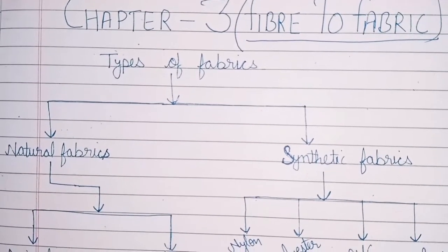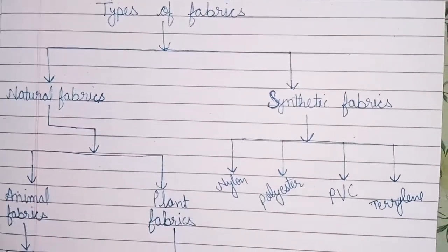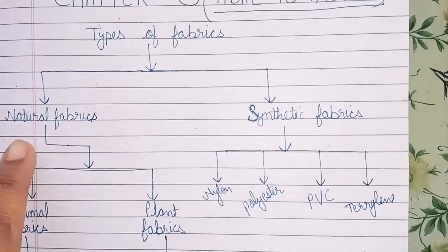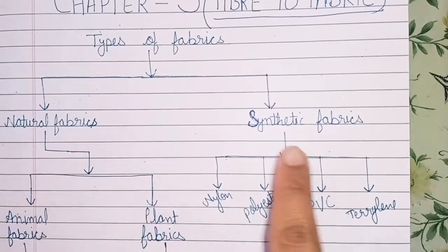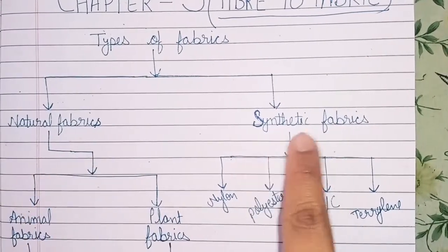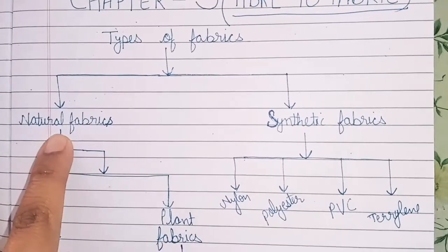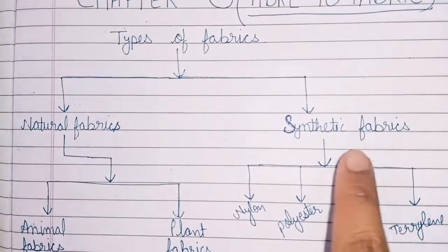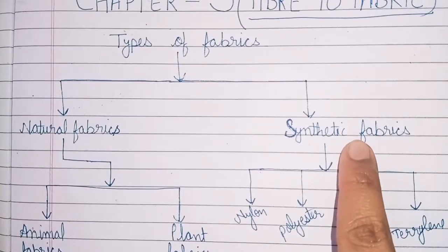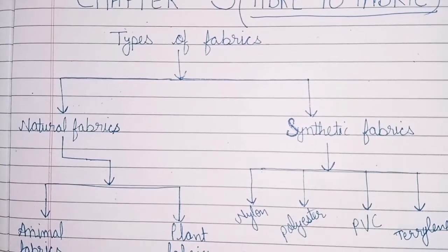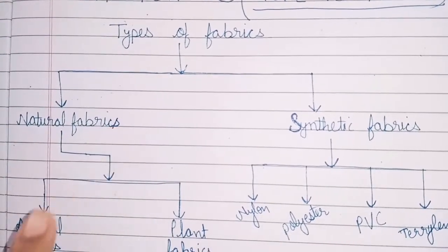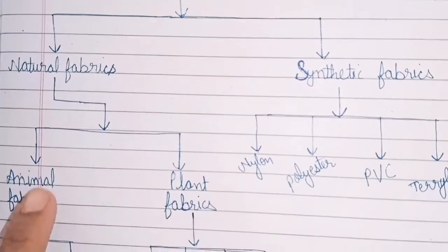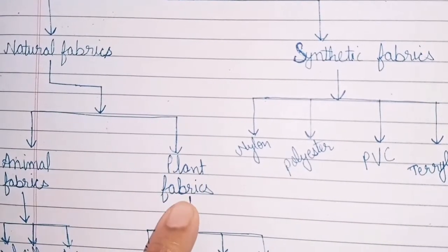In this chapter we learn about types of fabrics. There are two types of fabrics: first is natural fabrics and second is synthetic fabrics. Natural fabrics are made of natural materials and synthetic fabrics are made up of man-made materials. Natural fabrics are further divided into two types: animal fabrics and plant fabrics.